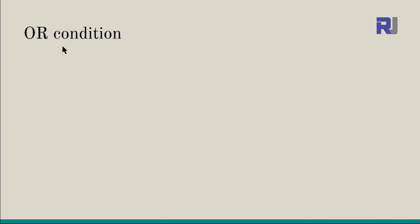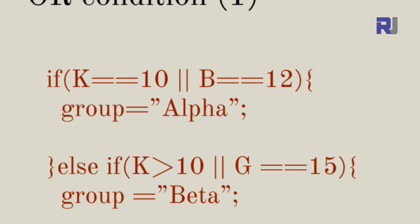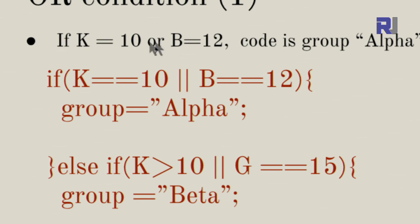There is also an OR condition. For example, if K equals 10 OR B equals 12, then the code group is alpha. Else if K is greater than 10 OR G equals 15, the code group is beta. Else, the code is not valid. This is an example of using OR in conditions. Let's look at the Arduino implementation of this.